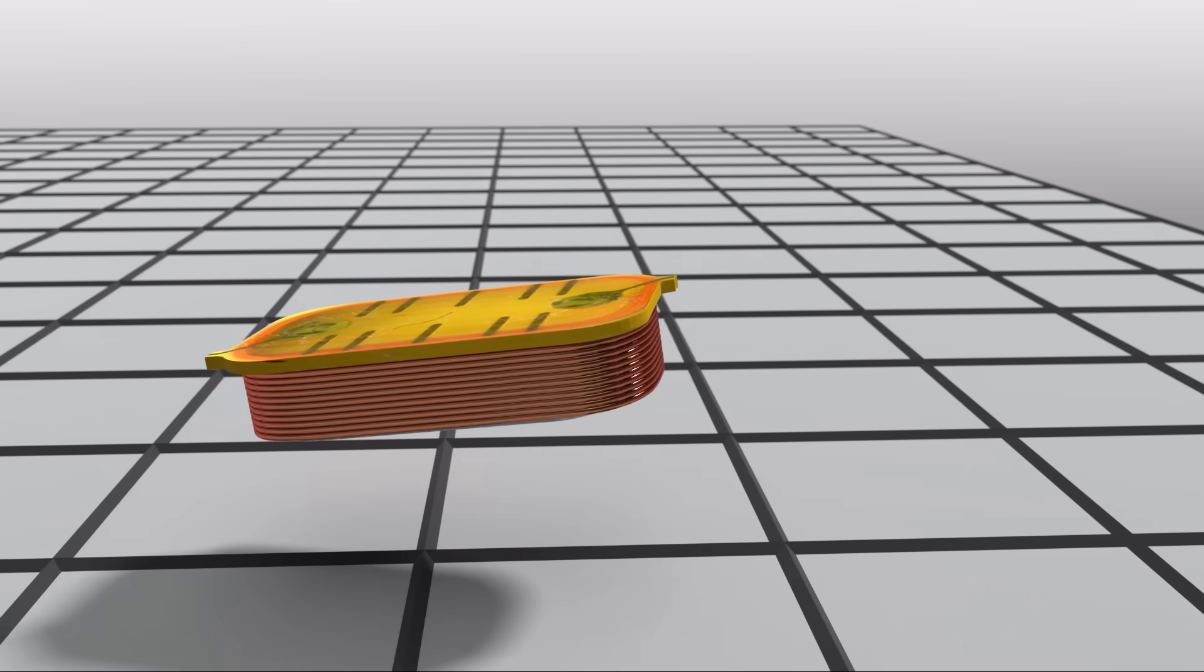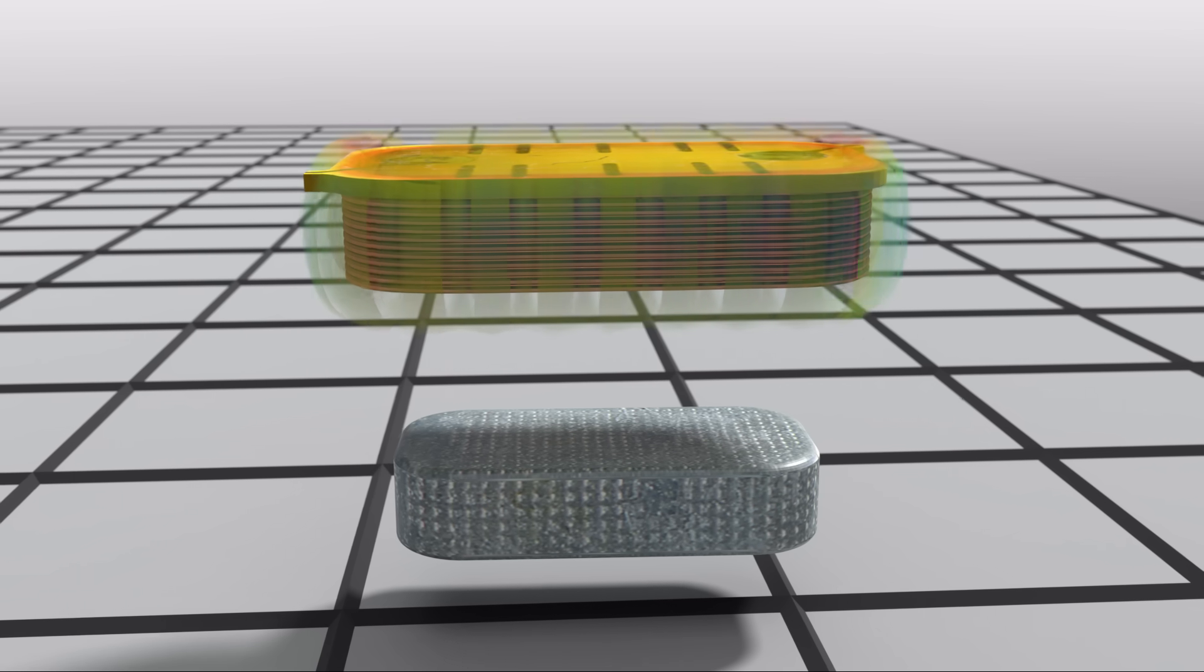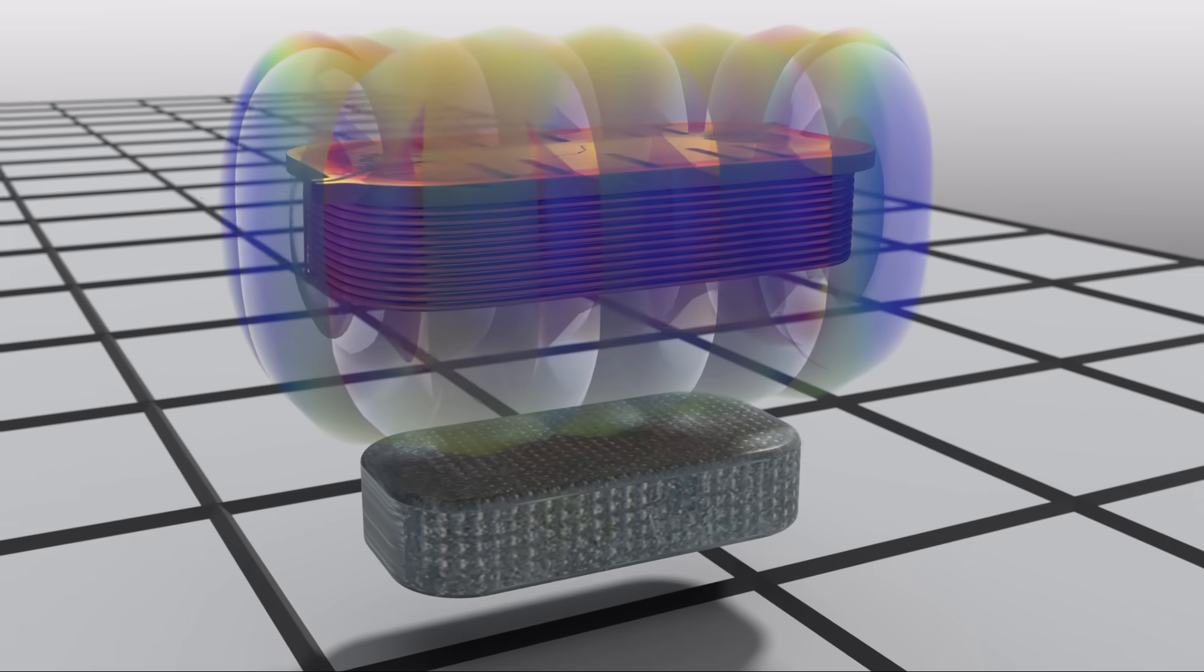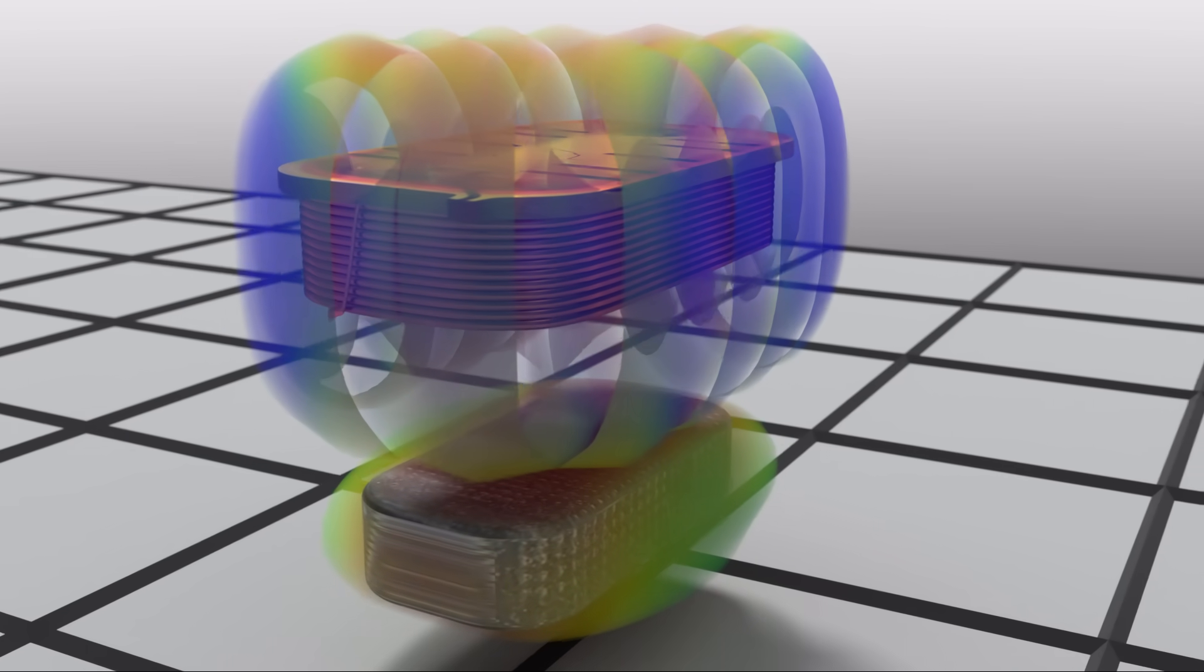When a current is applied to the coil, a magnetic field in the coil is generated or induced. The interaction between the coil's temporary magnetic field and the neodymium's permanent magnetic field cause the coil and the diaphragm to move.